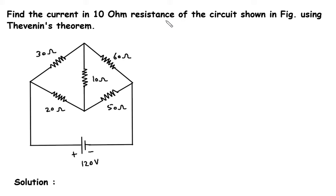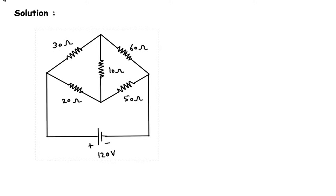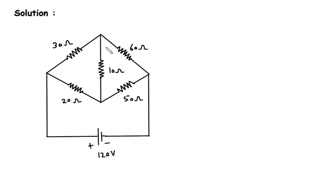Find the current in the 10 ohm resistance of the circuit shown in the figure using Thevenin's theorem. We have to find the current through this 10 ohm resistance using Thevenin's theorem. Let's say this is terminal A and terminal B, so this will be our RL. RL is equal to 10 ohm.